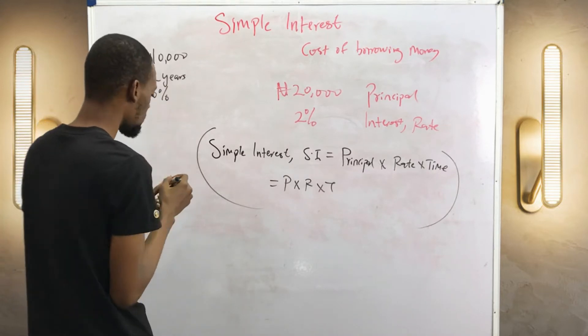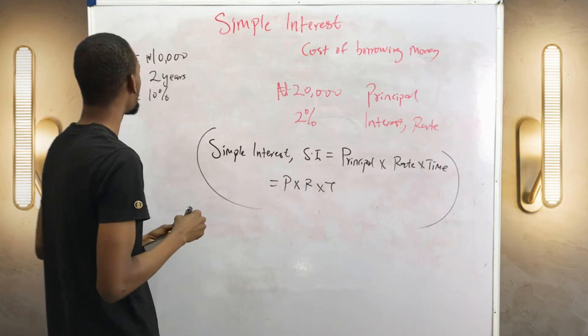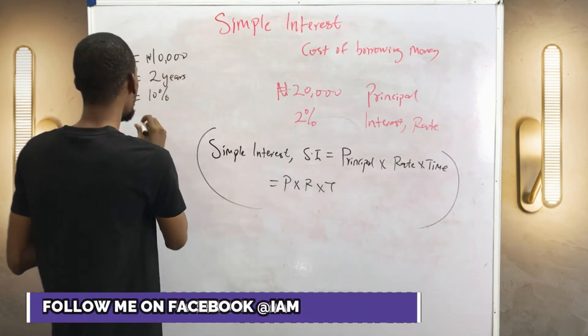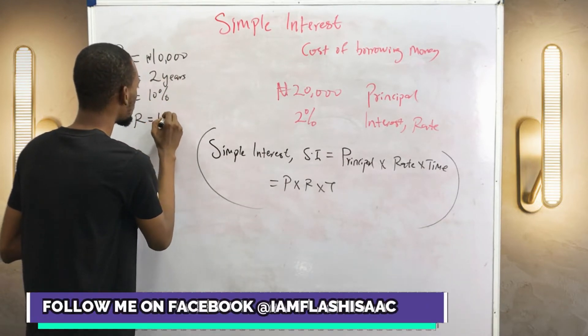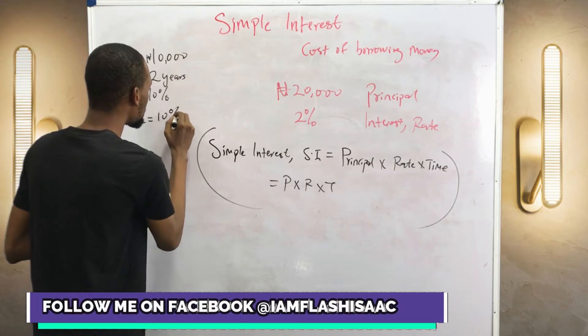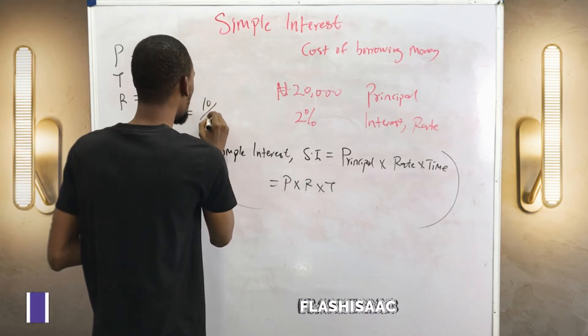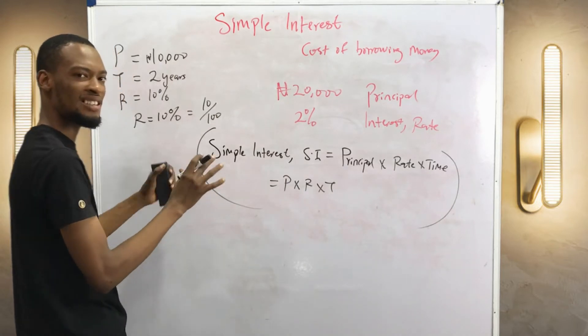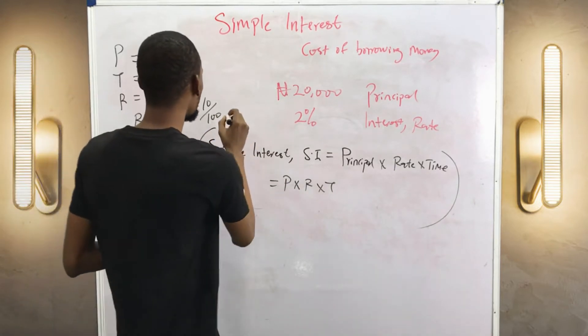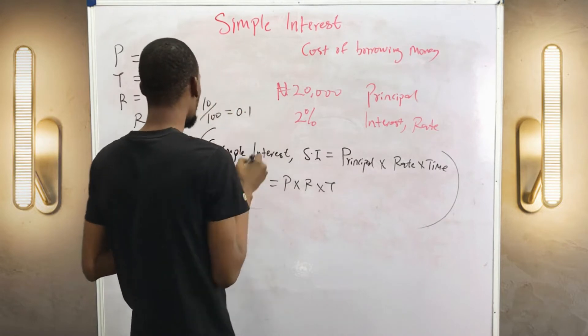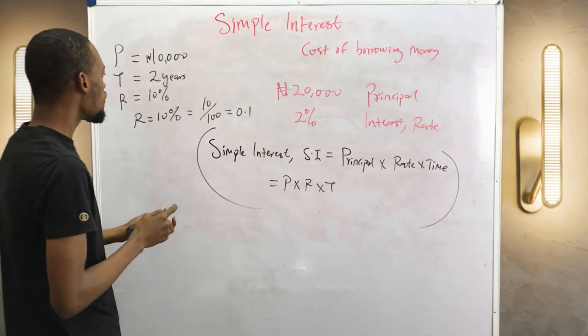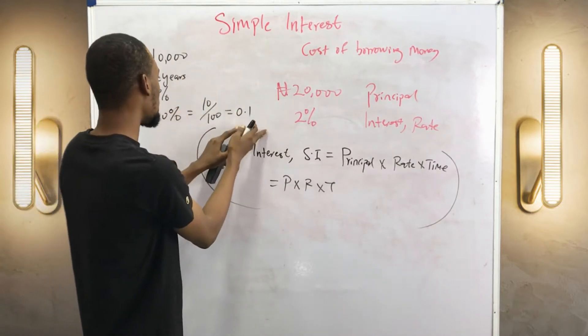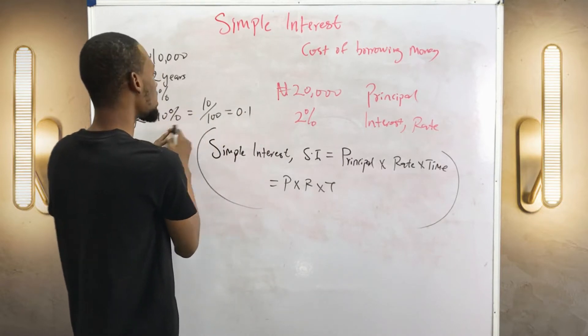Record that 10 percent rate. 10 percent in decimal is equals 10 over 100. I explained all these things in my video on rates. So 10 over 100 is 0.1. From percentage to decimal, 10% is 0.1.